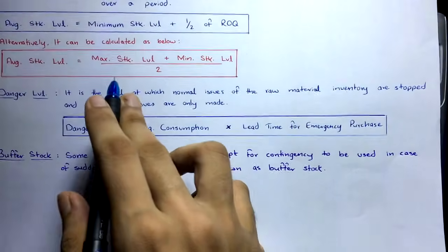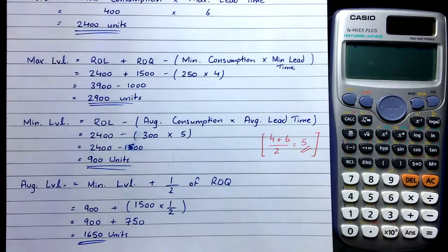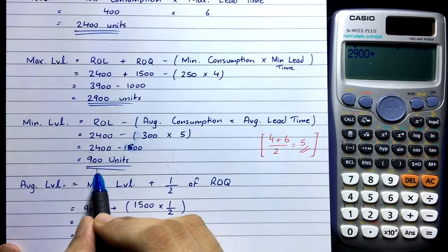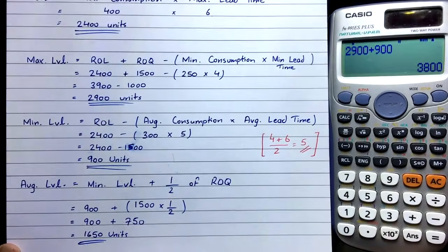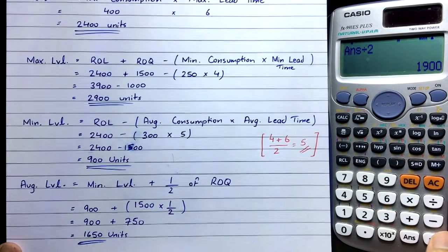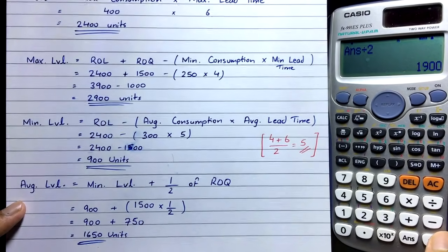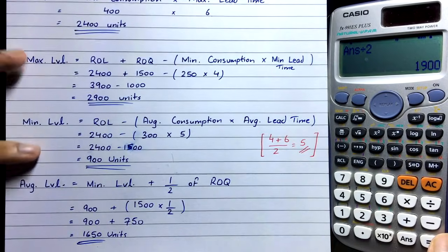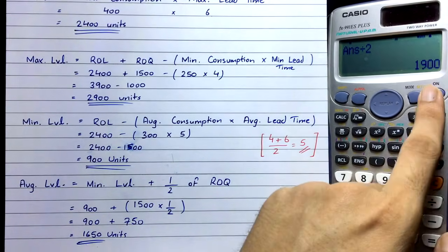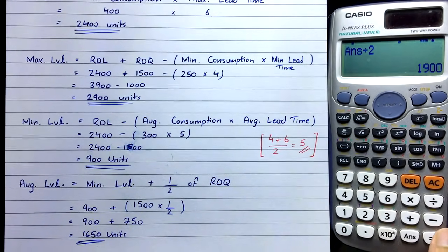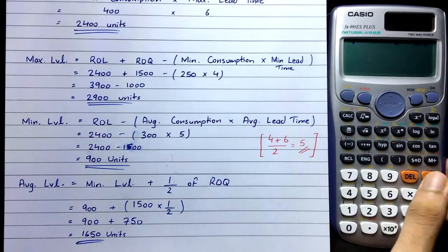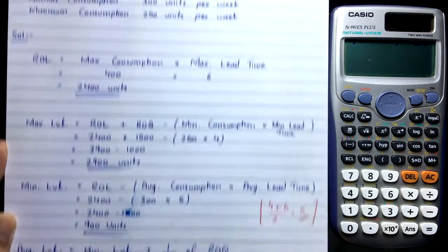Using Formula 2: (Maximum Stock Level + Minimum Stock Level) ÷ 2 = (2,900 + 900) ÷ 2 = 3,800 ÷ 2 = 1,900 units. The two formulas give different answers — 1,650 and 1,900 — but both are correct. Whichever formula you use in the exam you will get the marks. This is how you calculate stock levels.